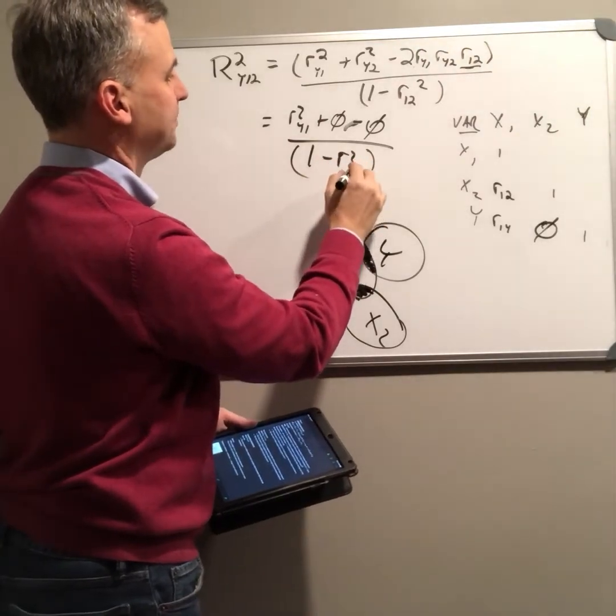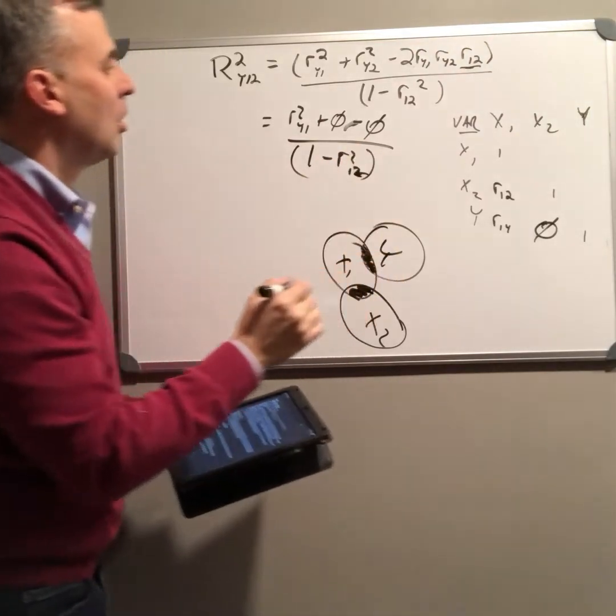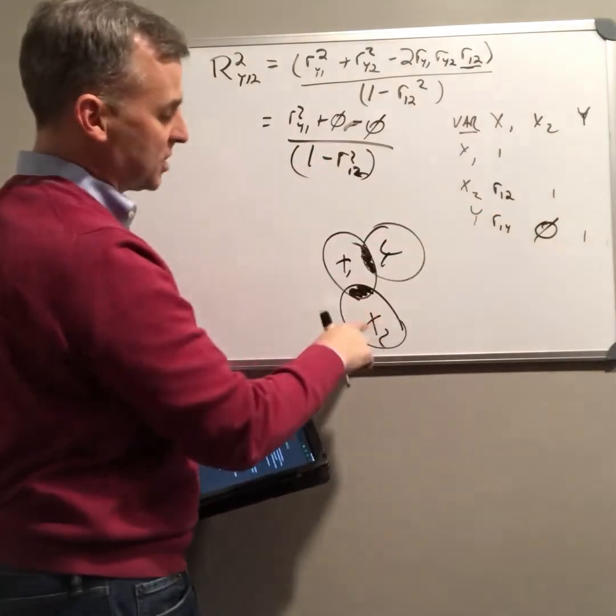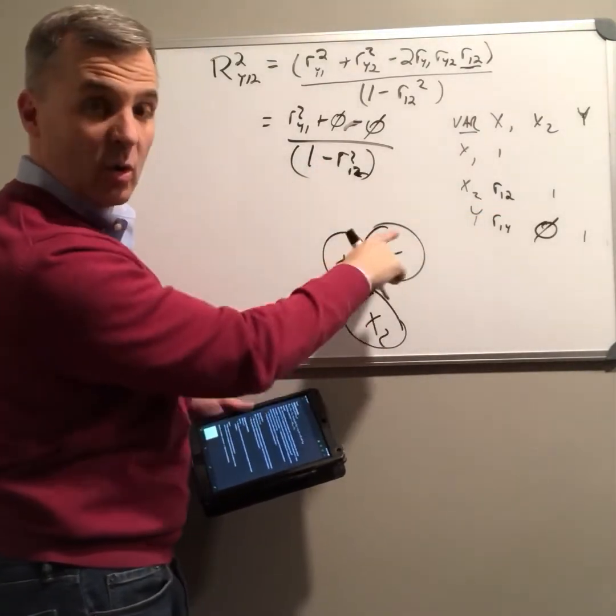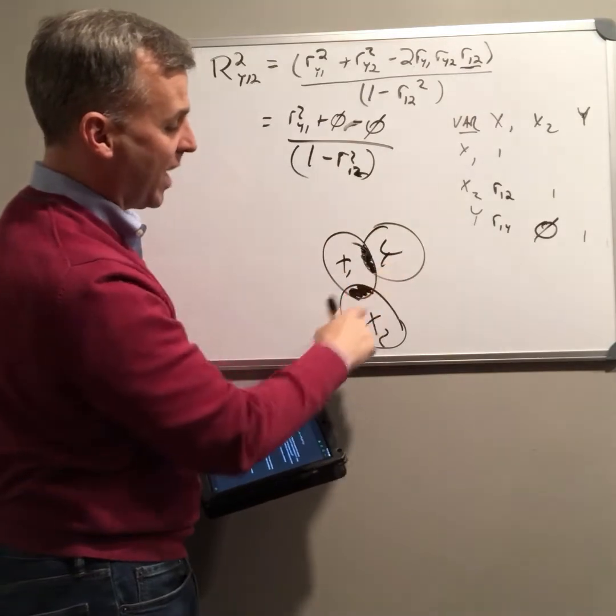Now, here's a thing, though. Before, when there was, if we assumed bivariate correlation, right? So x1 is predicting y, x2 isn't.